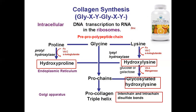The primary modification is hydroxylation of proline and lysine by the enzyme hydroxylase, which uses vitamin C as a coenzyme. Glycosylation of selected hydroxyl groups on lysine with galactose and glucose, and formation of inter-chain and intra-chain disulfide bonds, are made to the pre-pro-polypeptide chain before it becomes pro-collagen.